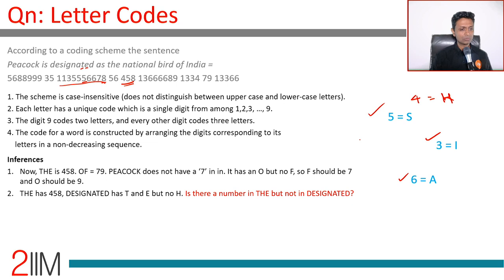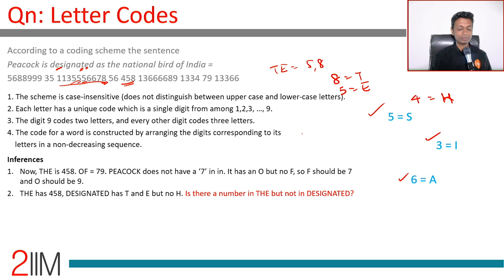So: four is H, five is S, three is I, six is A. T and E are five and eight in some order. S is already five, so we need to resolve T and E. Looking at a word with T and two E's: it has only one eight but two fives, so E must be five and T must be eight. Eight is T and five is also E.